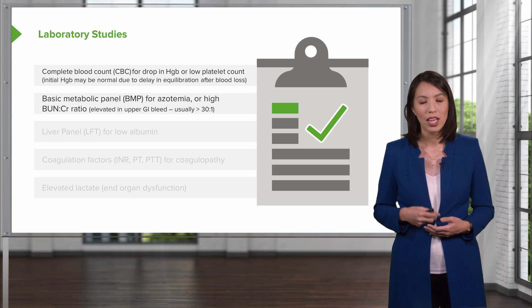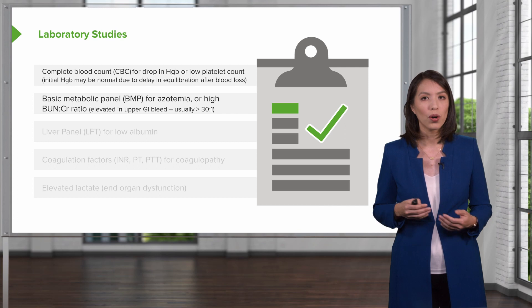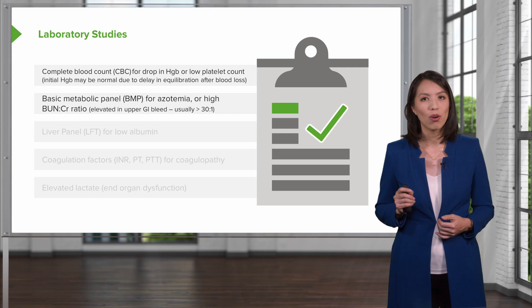Check a basic metabolic panel or BMP, specifically the BUN to creatinine ratio. A BUN to creatinine ratio greater than 30 to 1 has been shown to correlate well with the presence of an upper GI bleed. Note that this is only helpful for upper GI bleeds and not lower GI bleeds.